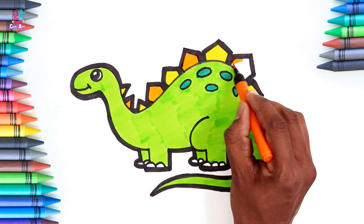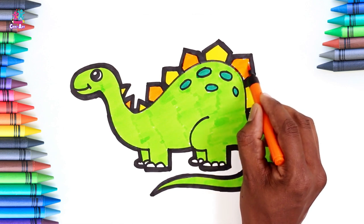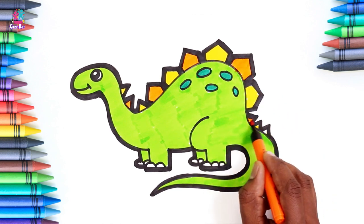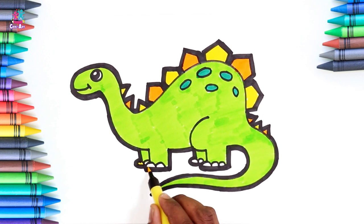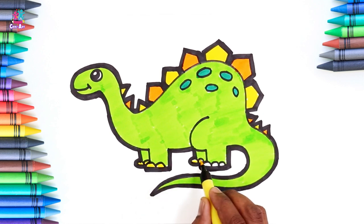Oranges and lemons at the bells of St. Clemens. Doing the toes yellow. And it's as easy as that. Well done.